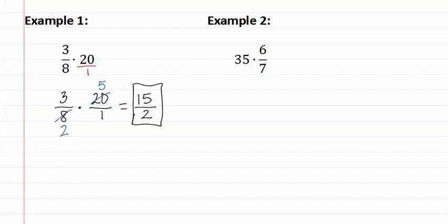Let's see example two. Once again, in example two we have a whole number. We can place this whole number over one because it doesn't change the number.